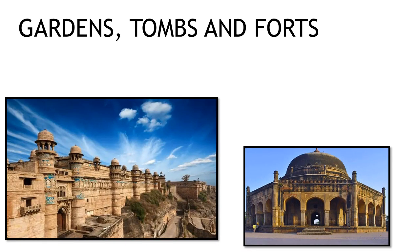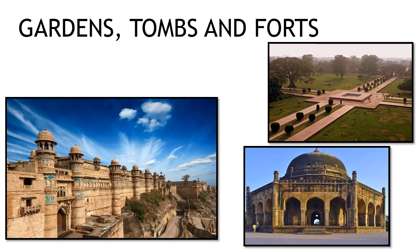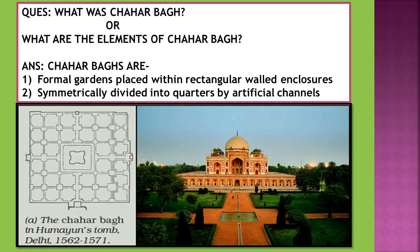Under the Mughals, architecture became very complex. Let's discuss elements of Mughal architecture used in making gardens, tombs, and forts. First, let's talk about gardens. The Mughals started making chahar bagh. These are formal gardens that have an almost rectangular shape and are symmetrically divided into quarters by artificial channels.